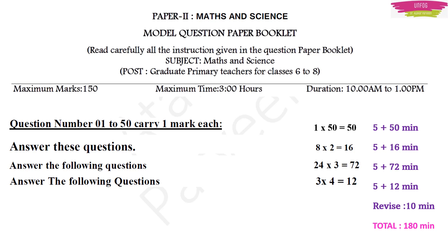Coming back to our time management — a short summary: the first 50 one-mark questions, take 5 minutes to read before starting, then take two to three rounds to fill all the answers — total 50 minutes. Then for descriptive paper, two-mark questions with 8 questions — take 5 minutes to read, then 2 minutes per question. For three-mark questions with 24 questions, take 3 minutes for each question. Some answers will be easy and take less than 3 minutes; some will be tough and may need 4 to 5 minutes. Overall you have to finish that section within 80 minutes — within one hour 20 minutes.